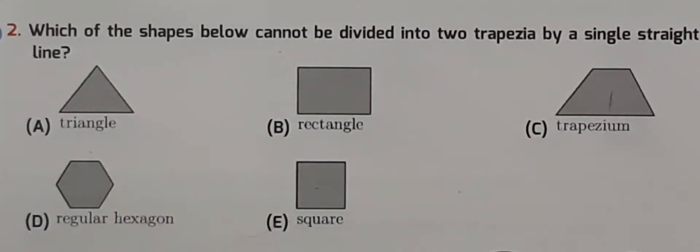The question is, if we draw a line through each shape, which one will not create two trapeziums? Let's check each one.